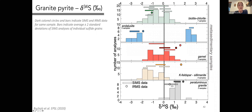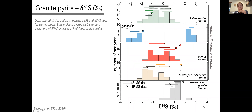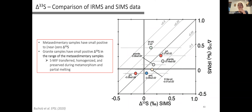Connecting the granites back to the metasedimentary rocks: the peraluminous granite δ³⁴S values shown in gray are slightly isotopically heavy — around +1‰ — and within the same range as the higher-grade metamorphic samples. In the peraluminous granites, pyrite is well-behaved in the SIMS so both methods agreed quite nicely. This suggests the granites are recording the sulfur isotopic composition after prograde metamorphism, with maximum fractionations on the order of two to three per mil.